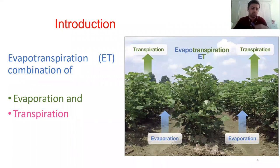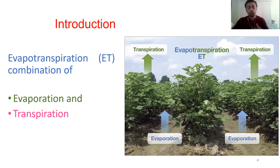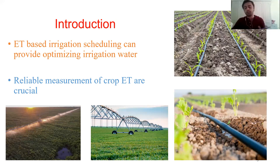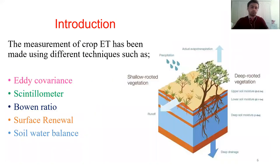Evapotranspiration is the most important parameter in water resource management. As we all know, ET is the combination of evaporation from the land and transpiration from the plants. We can use this ET information in irrigation scheduling to optimize irrigation water use. To do that, we need reliable ET measurements — without this information we cannot achieve good results.